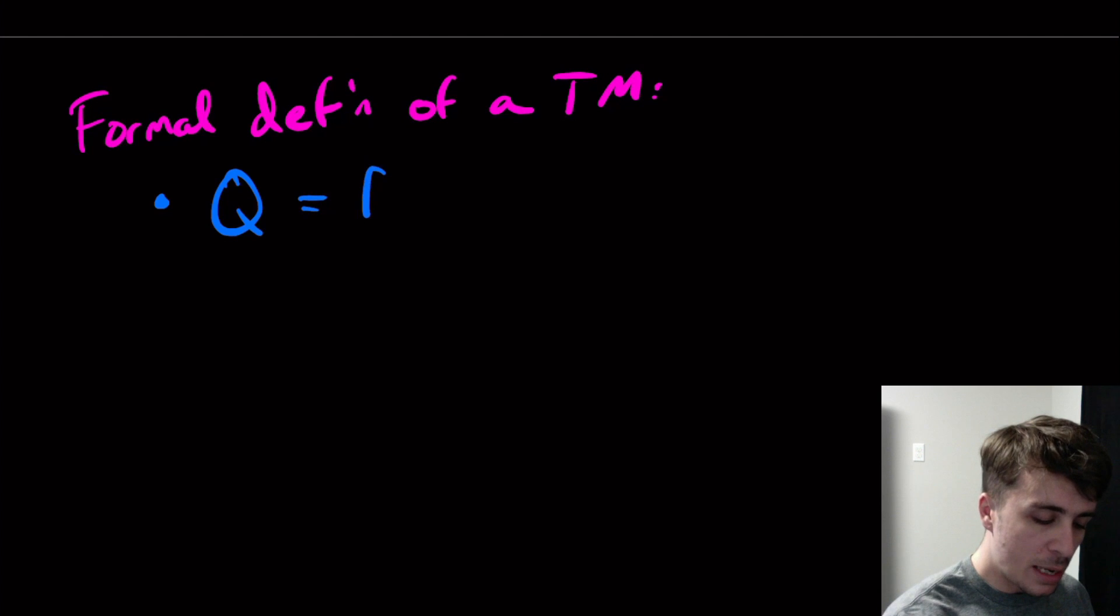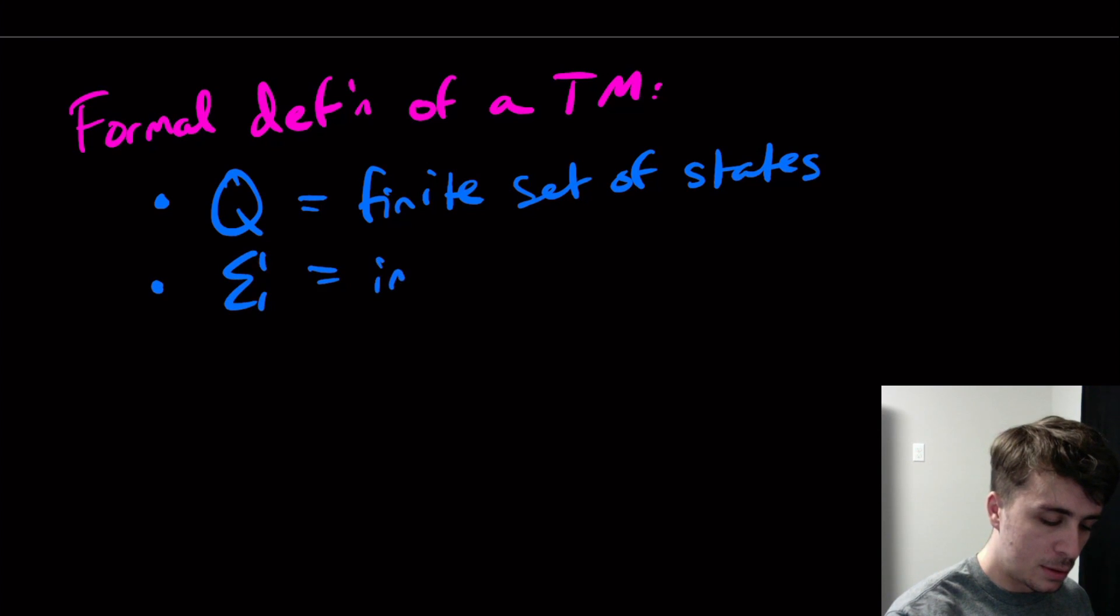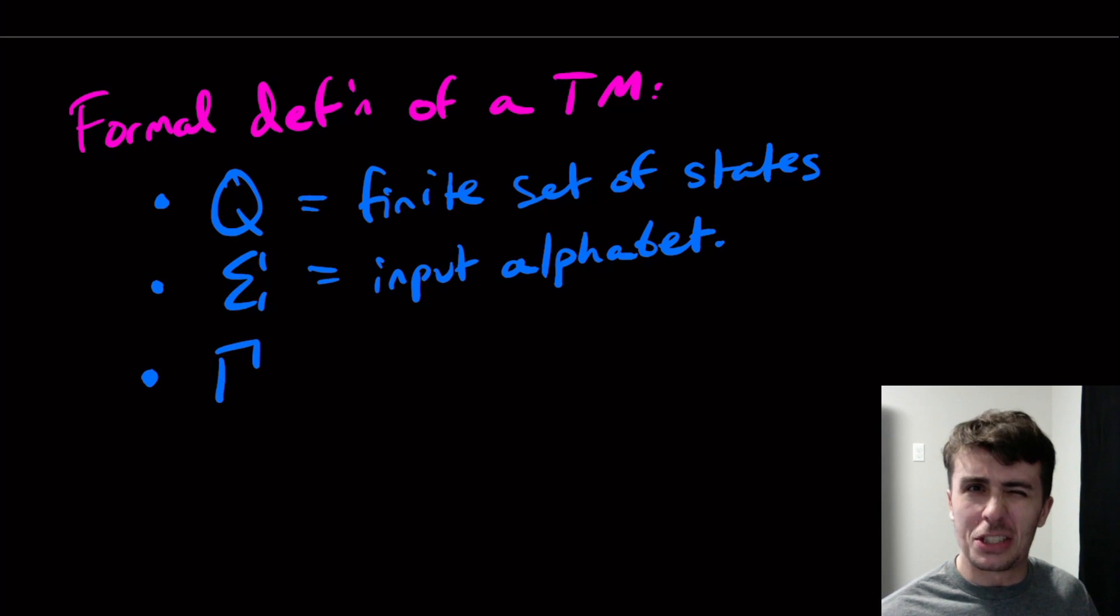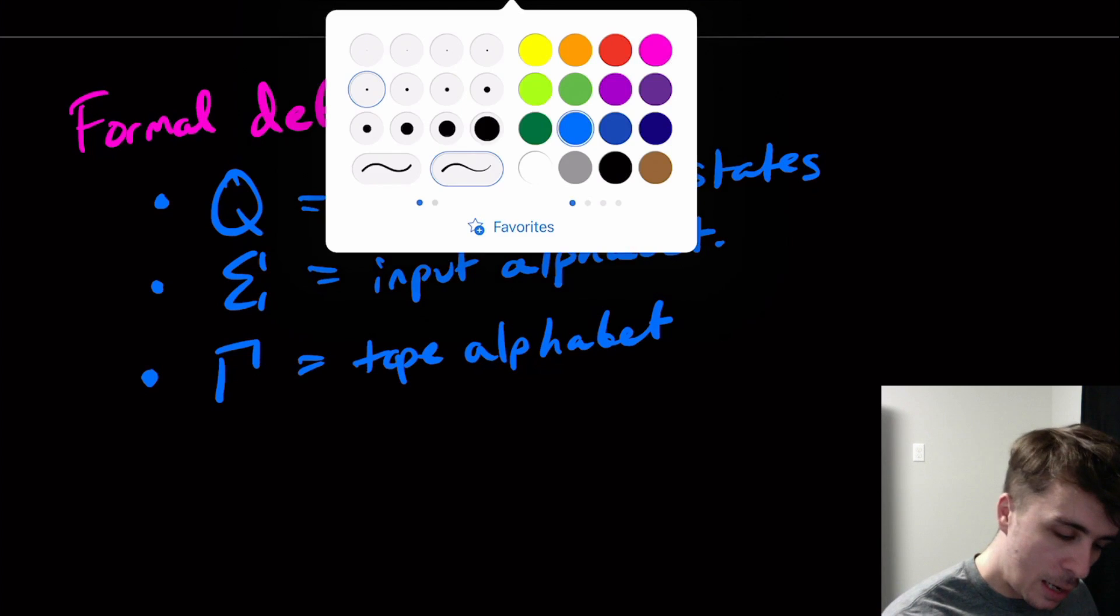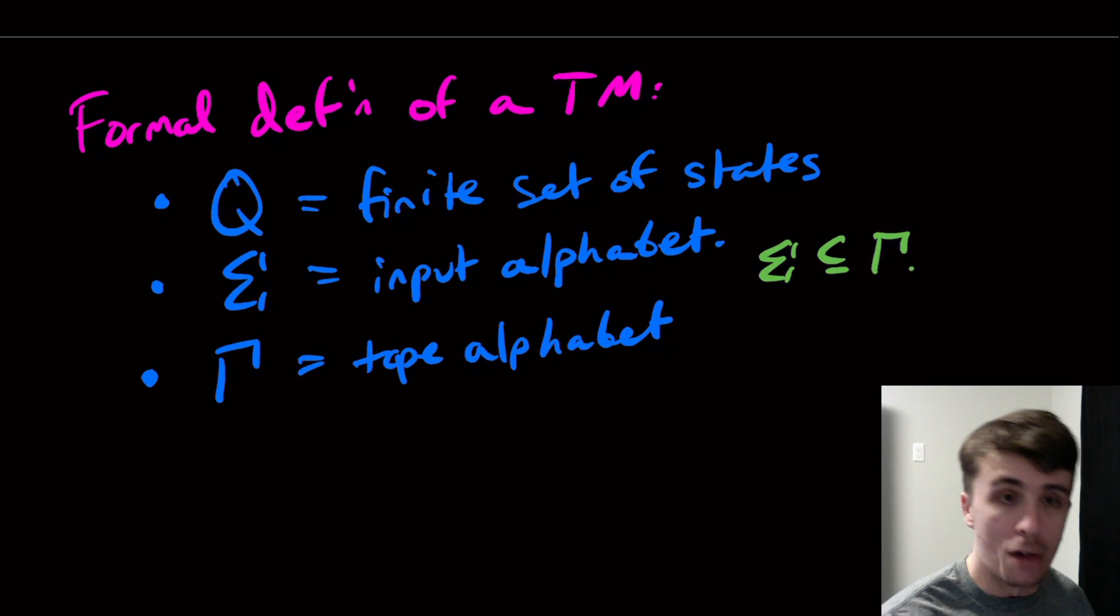Let's look at a more formal definition of a Turing machine. It's a state-based machine, just like DFAs and PDAs. Q is a finite set of states. We have an input alphabet Sigma, also finite, no difference there. We have a set Gamma, which is the tape alphabet, the set of all things belonging on the tape. One thing we can notice is that Sigma is a subset of Gamma.